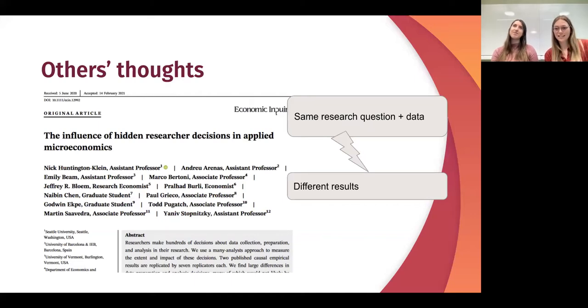This paper had multiple replicators analyze two same data sets. In the end, none of them had the same sample size, and the statistical significance was varying between their models. This really highlighted those decisions that you make. A lot of times those decisions you make along the way are not as objective as you might think in the first place.